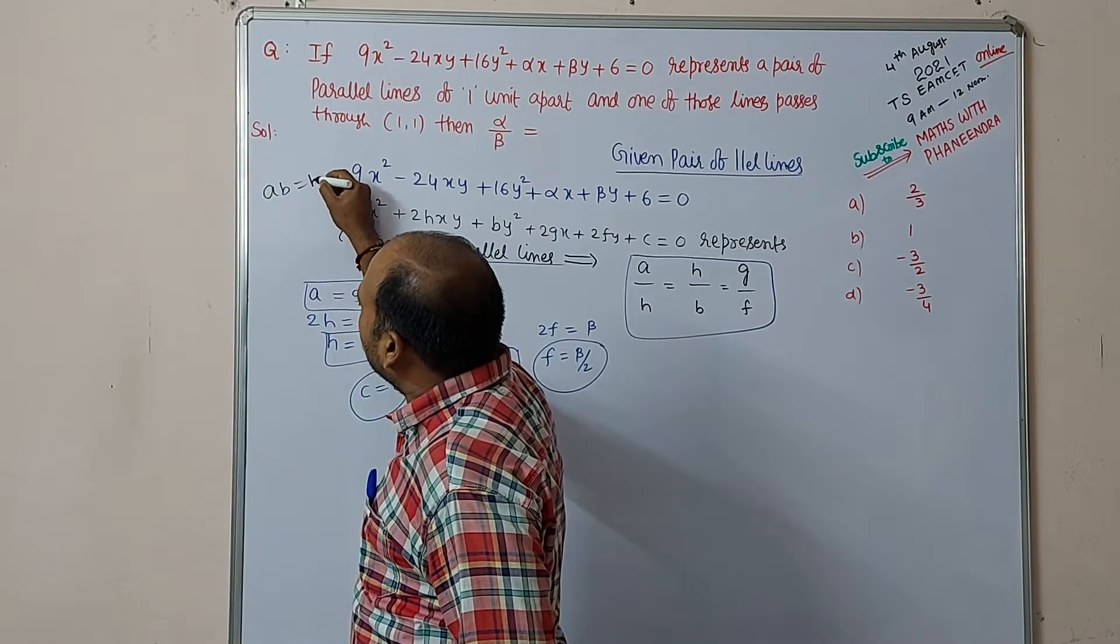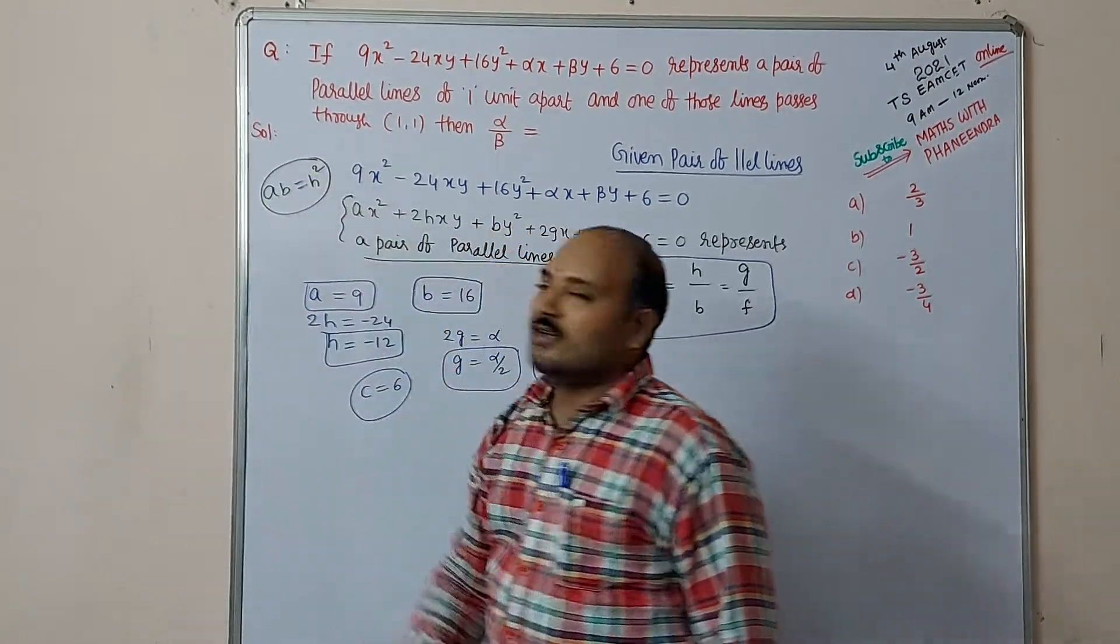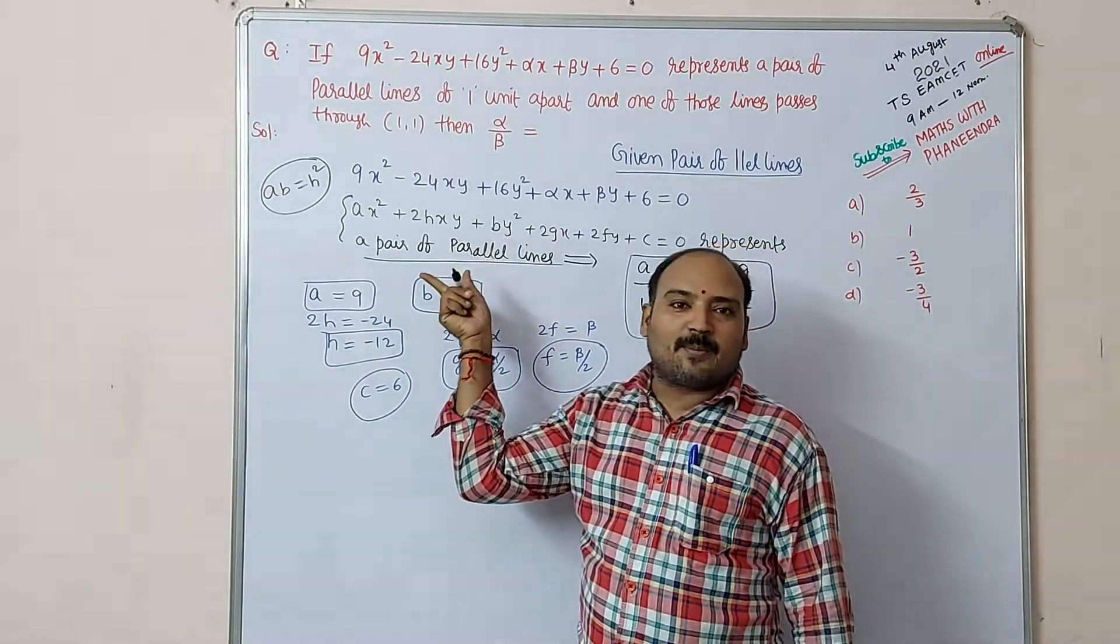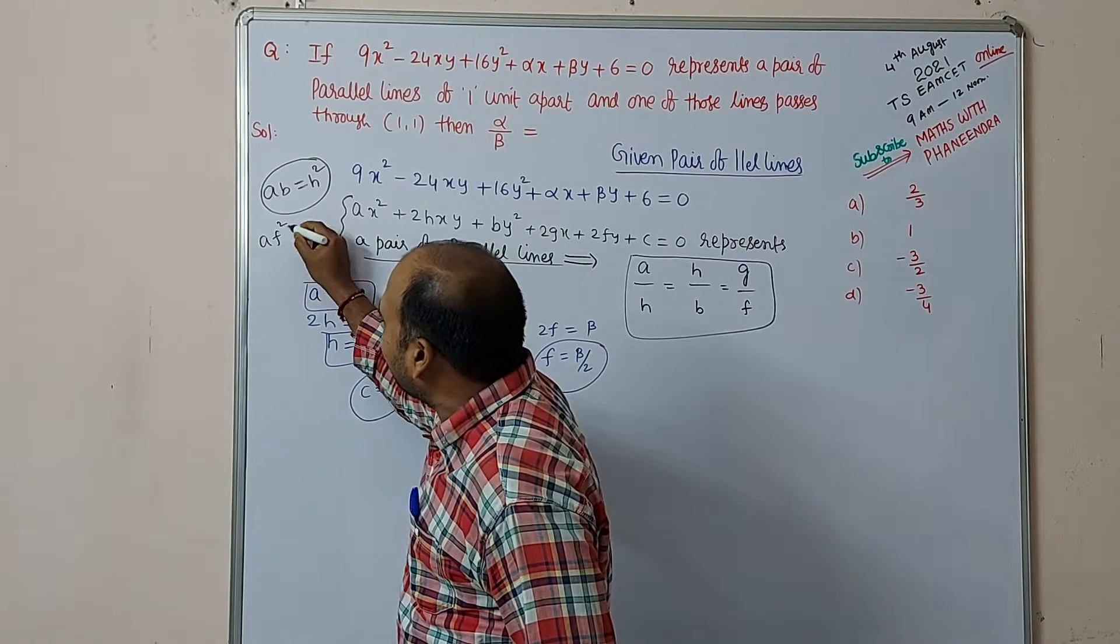h² = ab, we proved also. Whenever this pair of lines representing parallel, h² = ab and af² = bg².